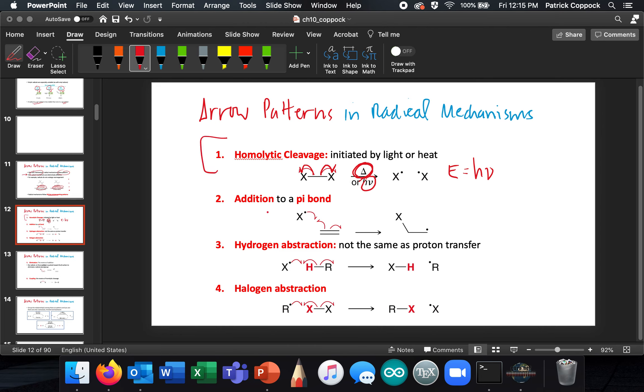Addition to a pi bond, which I don't think is easy. So you get this pi bond here, and one electron comes off, another electron comes, that radical electron comes here and it makes the bond. So there's the new bond that got made, and the other electron goes over here as a radical. So you have addition to a pi bond.